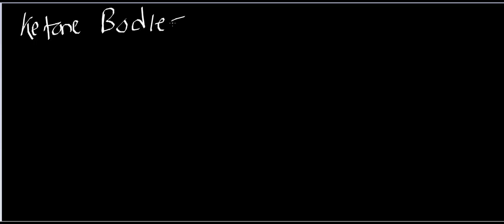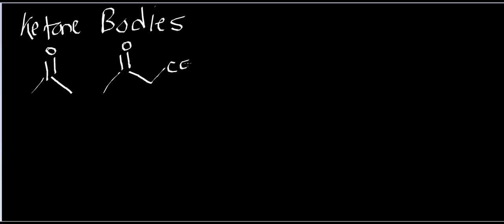Welcome to the playlist on ketone bodies. In this video we're going to look at ketone bodies — and it turns out there are three ketone bodies. The first one is acetone, the second is acetoacetate, and the third is beta-hydroxybutyrate. These three molecules are ketone bodies, and they tend to be produced by people who are not actively metabolizing glucose.